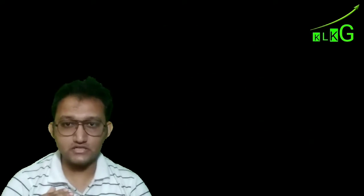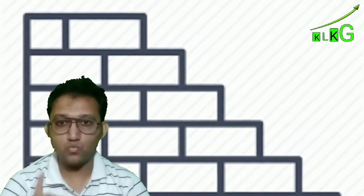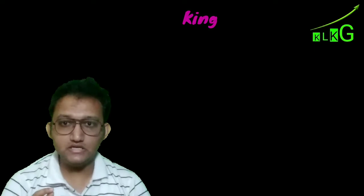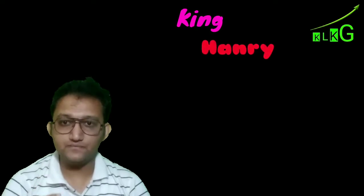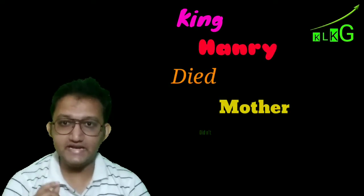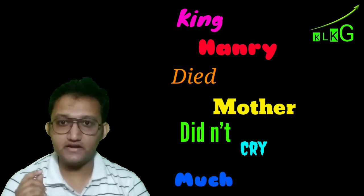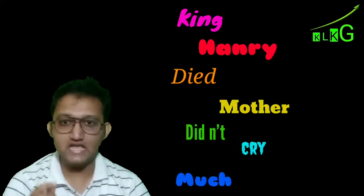Now here we just have to remember this like a footstep. We only have to remember one chart, and I will give you a clue to learn it. The clue is: King Henry died, Mother didn't cry much. King Henry died, Mother didn't cry much.